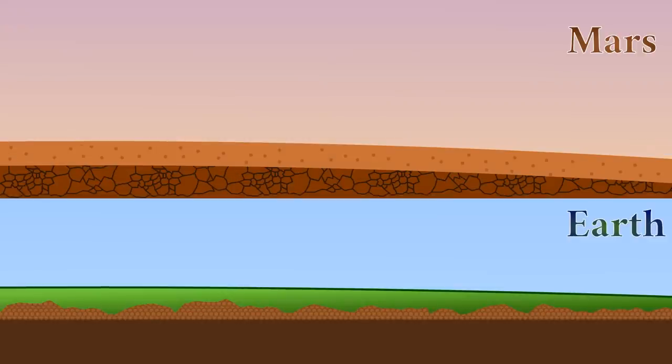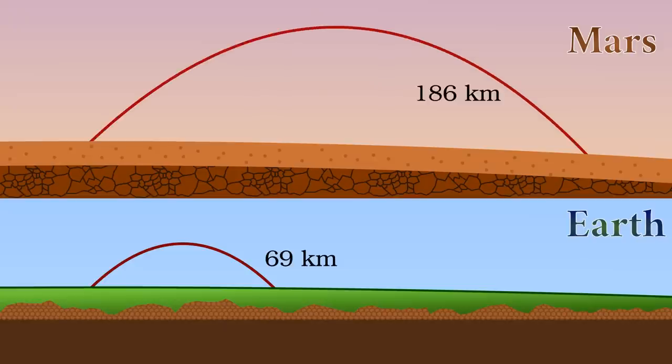Taking the curvature of both planets into account, but no force other than gravity, the range of FLAC is about 69km on Earth and 186km on Mars, as shown to scale here. The weaker gravity allows the shell to go higher and further on Mars.